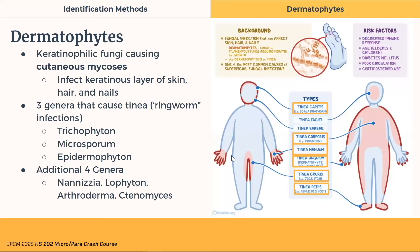Let's review the dermatophytes. They cause cutaneous mycoses that infect keratinous layers of skin, hair, and nails. There are three genera that generally cause tinea or ringworm infections: Trichophyton, Microsporum, and Epidermophyton, with additional four genera. Important tinea infections include tinea capitis (scalp), tinea corporis (body), tinea manuum (hands), tinea unguium (nails), tinea cruris (groin/thighs — jock itch), and tinea pedis (feet).